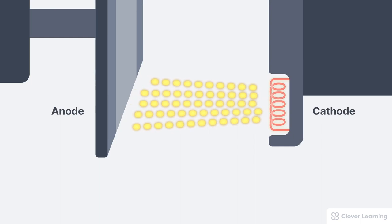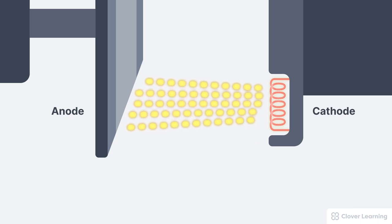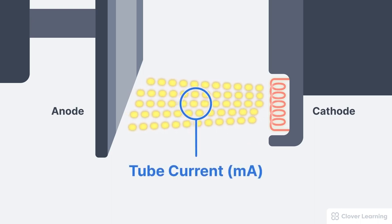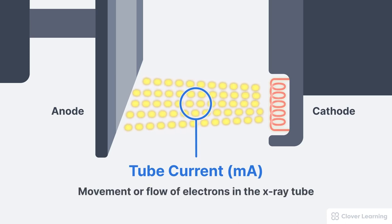X-rays are produced when electrons travel from the cathode filaments and interact with atoms in the anode target. This movement of electrons is what we call the tube current. Tube current is measured in units of milliamperes, which is abbreviated MA. So tube current is simply the movement or flow of electrons in the x-ray tube.